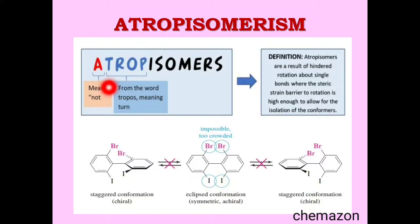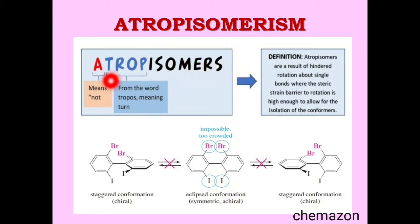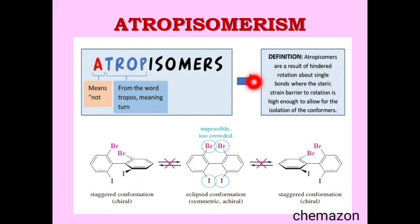Now let us understand the concept called atropisomerism. 'A' means 'not' and 'trop' means 'turn.' So these are isomers in which the rotation across a single bond is restricted. Atropisomers are a result of hindered rotation about single bonds where the steric strain barrier to rotation is high enough to allow for the isolation of the conformers.